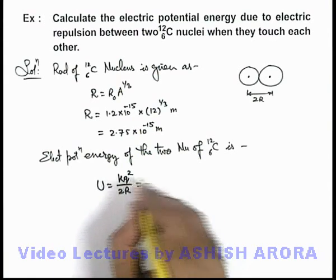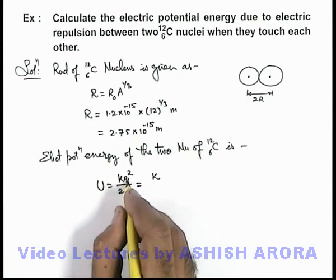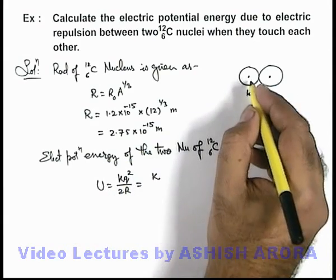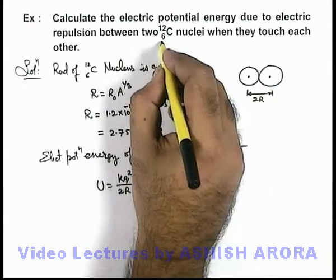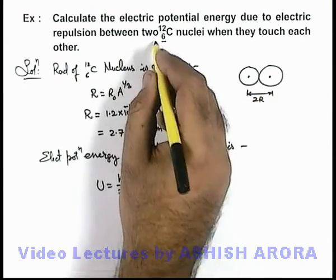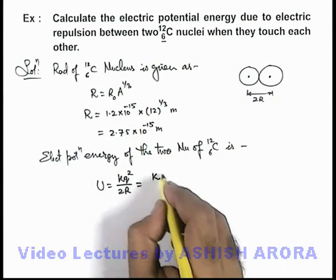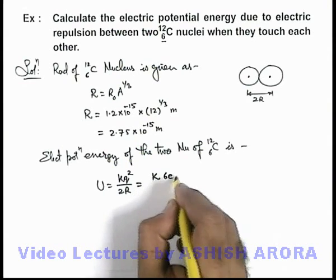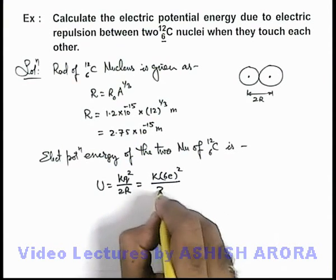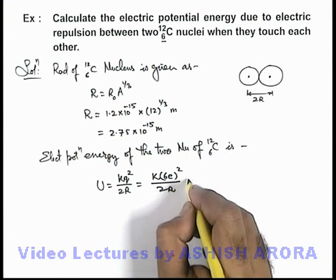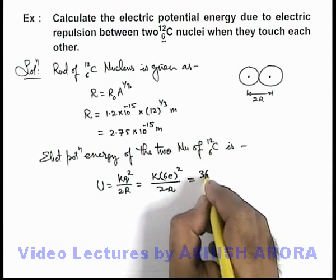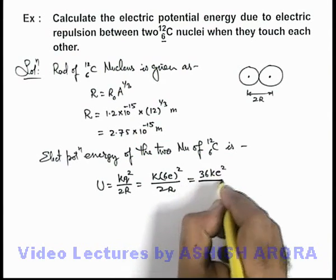It will be k, and the charge on each nucleus we can directly write as 6e, because inside the nucleus there will be 6 protons. So it will be (6e)² divided by 2R. In this situation that will be 36ke²/2R.